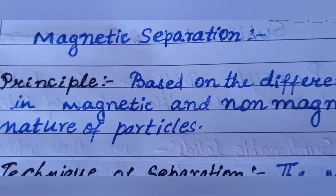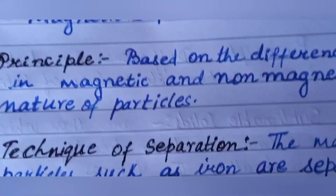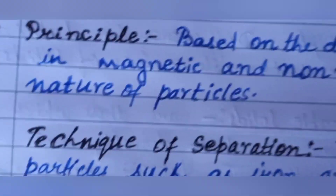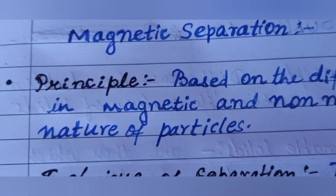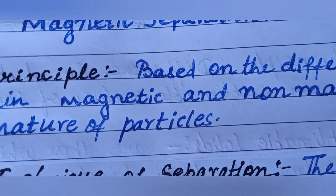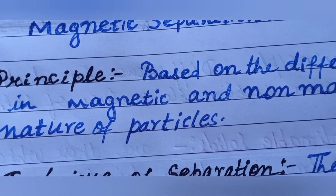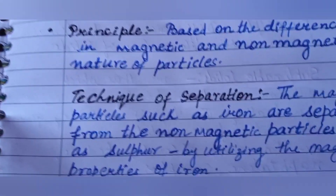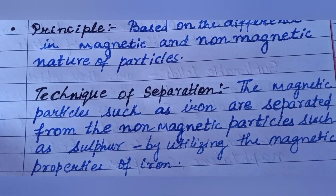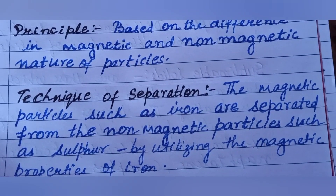Magnetic separation is used when one of the components of the mixture is magnetic, like iron. Materials such as iron that are attracted towards a magnet are called magnetic materials, and those not attracted by the magnet are called non-magnetic particles. Based on the difference in magnetic and non-magnetic nature of particles, this separation method is used.